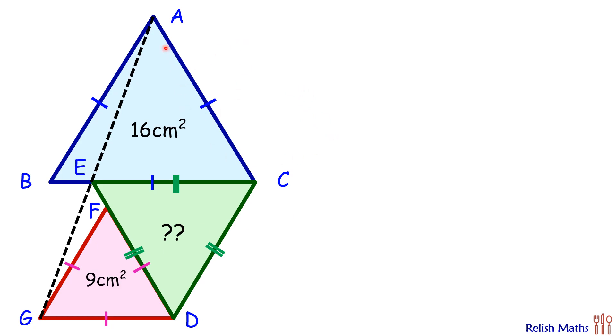Now we know that equilateral triangles are similar to each other, so triangle ABC and triangle FGD are similar to each other, and thus the ratio of area will be equal to the ratio of the square of the sides.